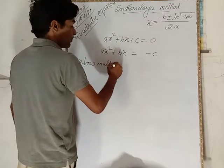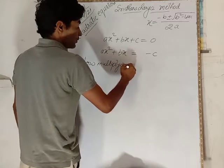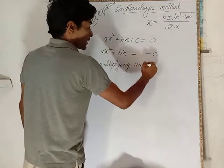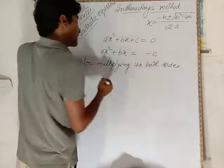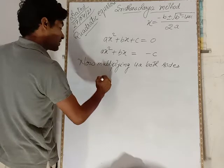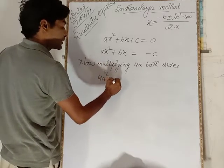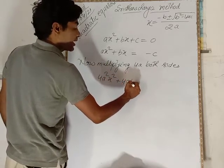Now multiplying both sides by 4a. This becomes 4a²x² plus 4abx is equal to minus 4ac.